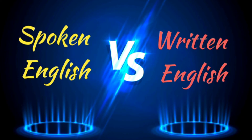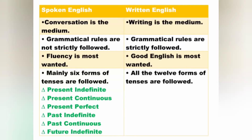First, we're going to look at the differences between spoken and written English. The first point is about the medium. In spoken English, conversation is the medium, and in written English, writing is the medium. The second point is about grammatical rules. In spoken English, grammatical rules are not strictly followed, but in written English, grammatical rules are strictly followed.